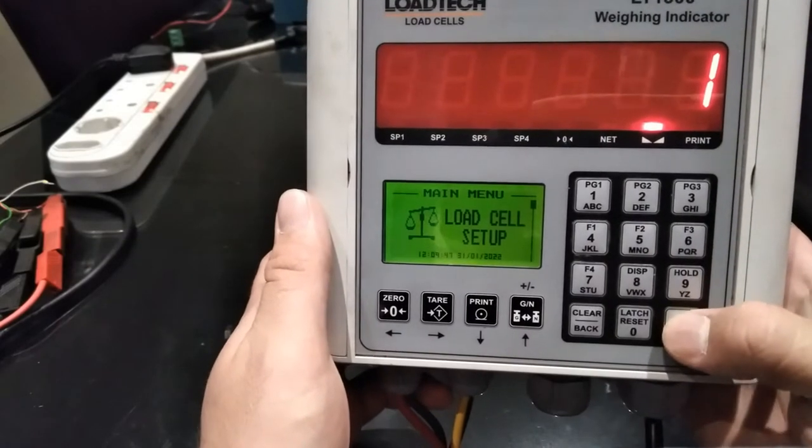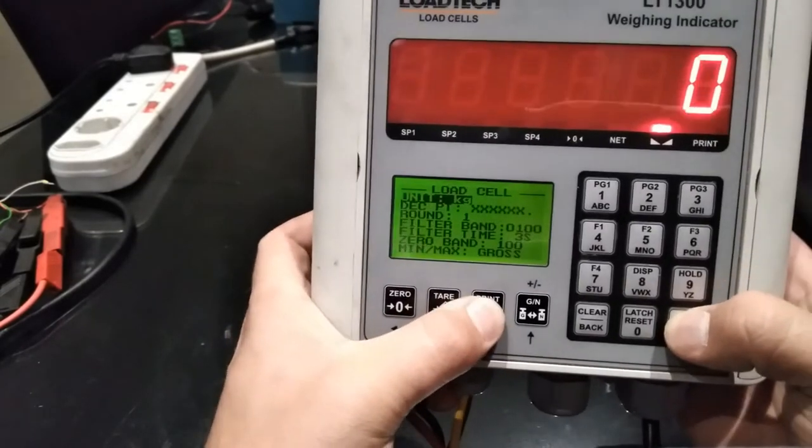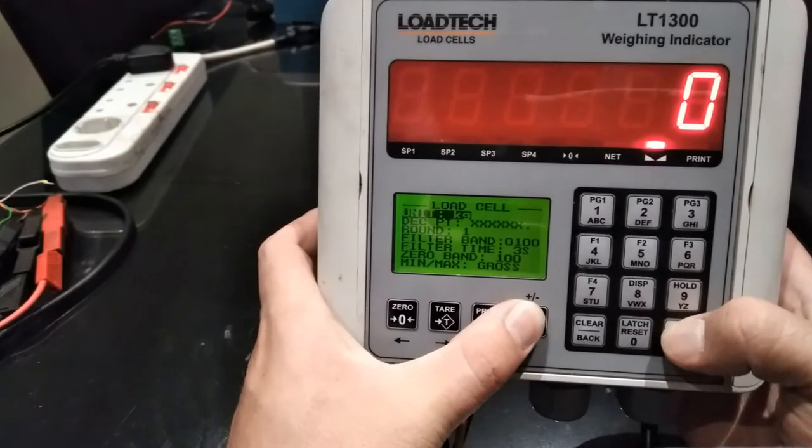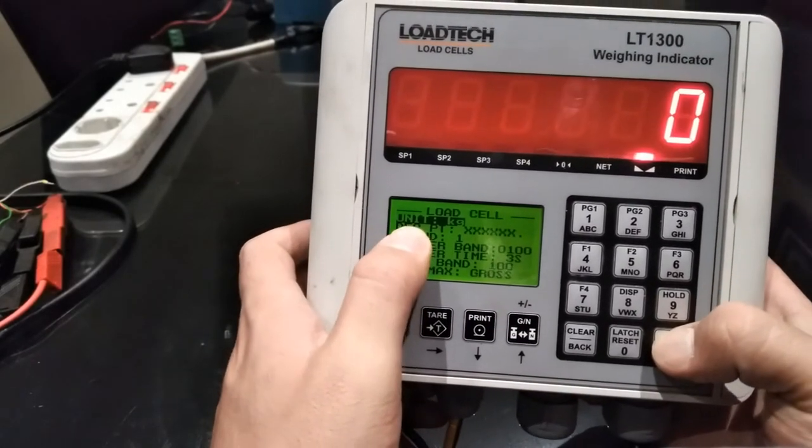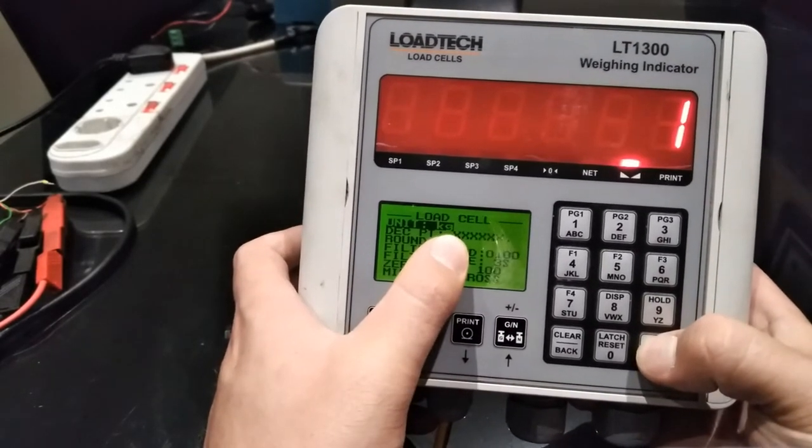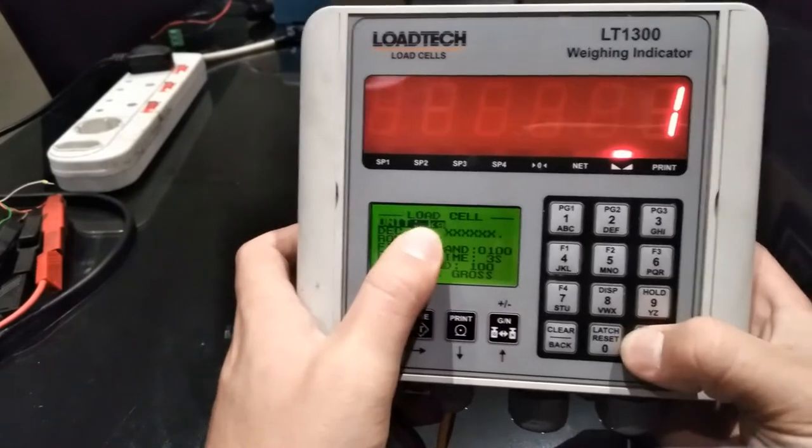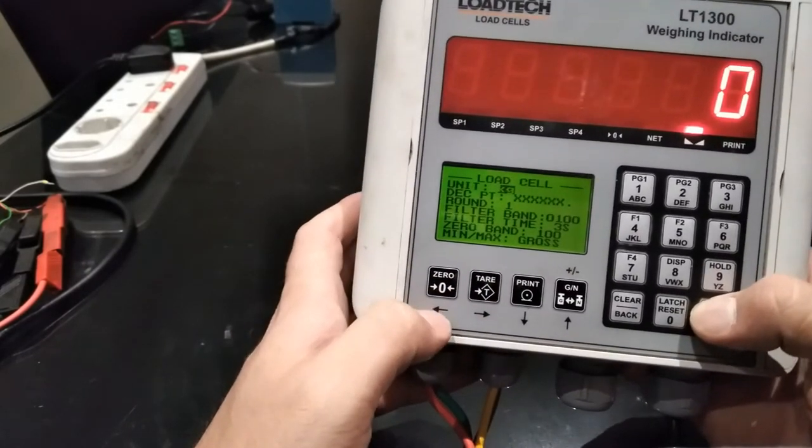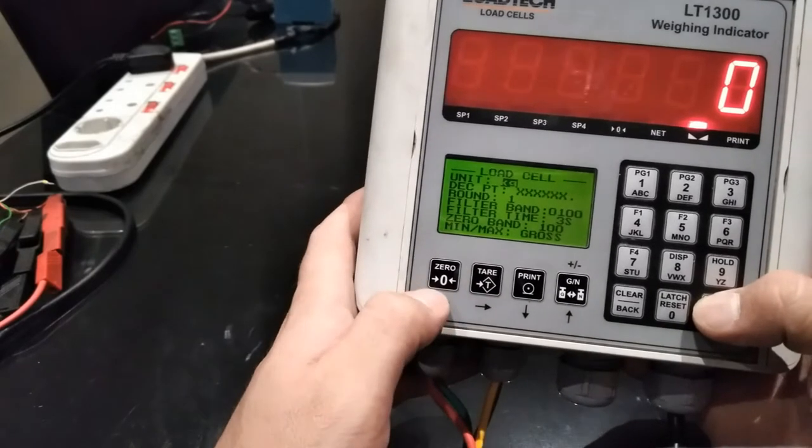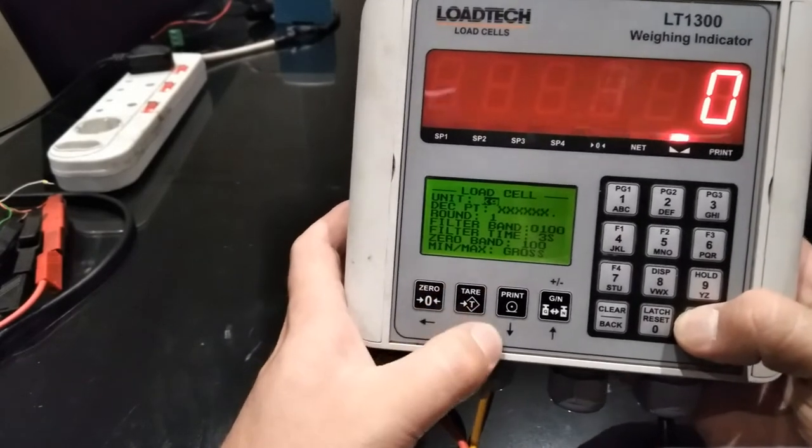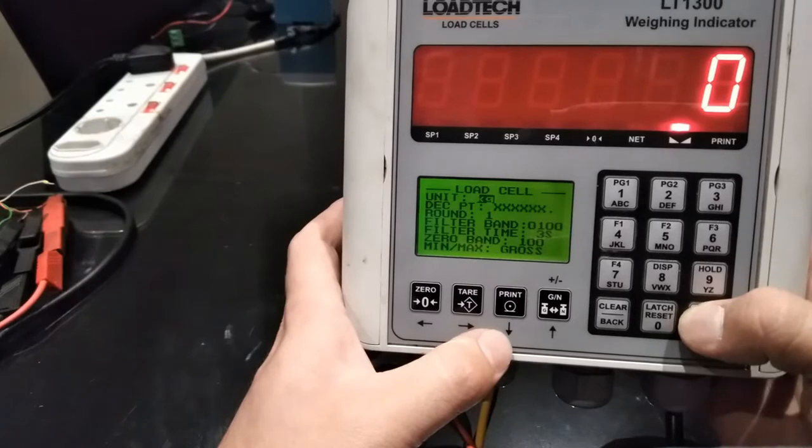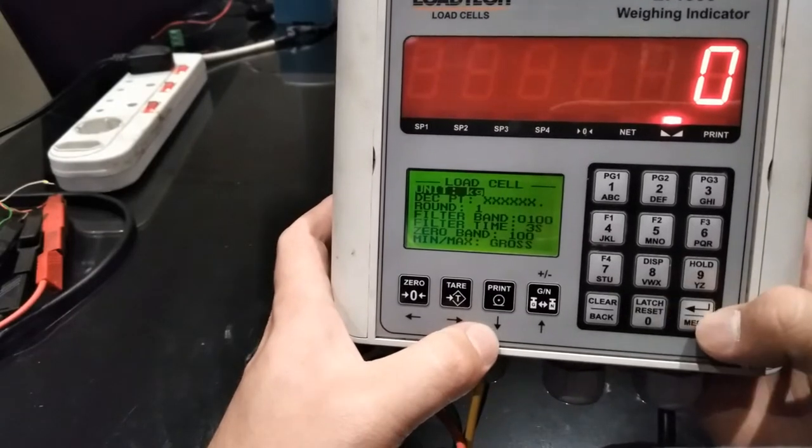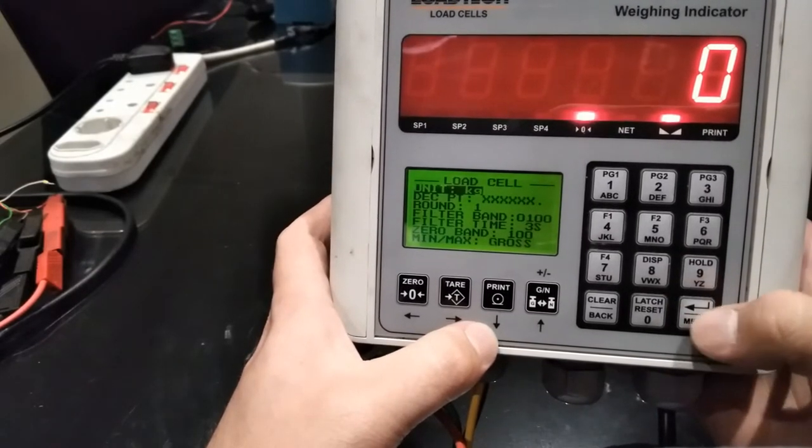First enter load cell setup. Here you can change your units. Notice the difference between the entire line being highlighted, which is how you move up and down, and only the unit being highlighted, which is how you change the unit. This will be changed with the left and right key. For this exercise we will use kilograms. Once you've chosen your units press enter.